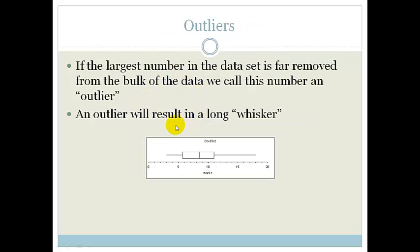Now let's talk about the whiskers. If the largest number in the data set is far removed from the bulk of the data, we call this number an outlier. Here we've got our box and whisker diagram. Do you see this number over here? It's far away from this.